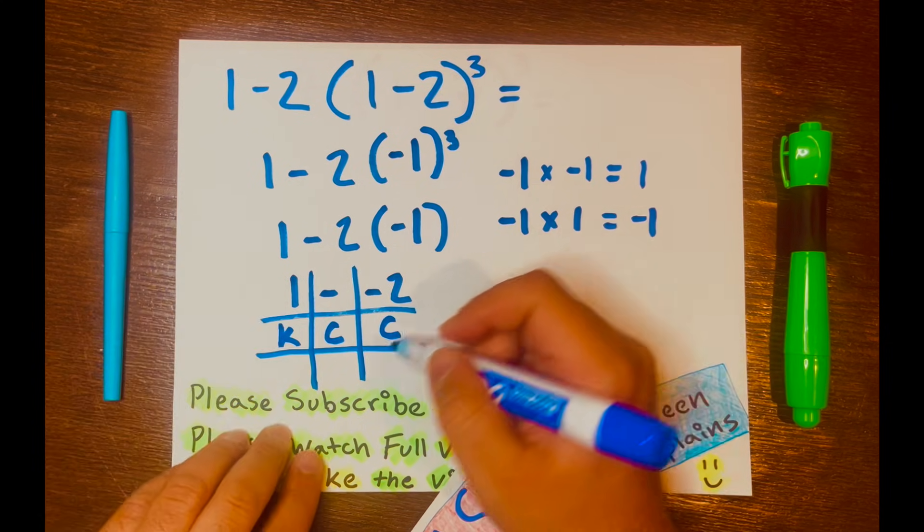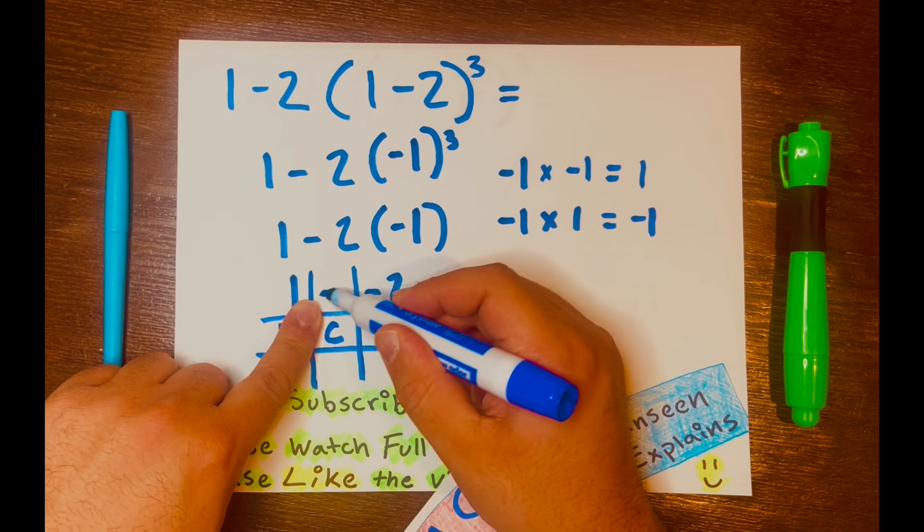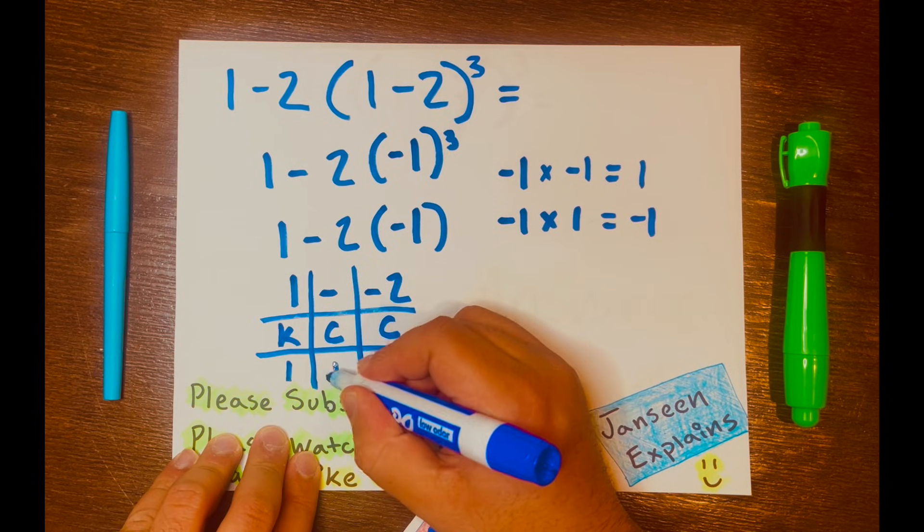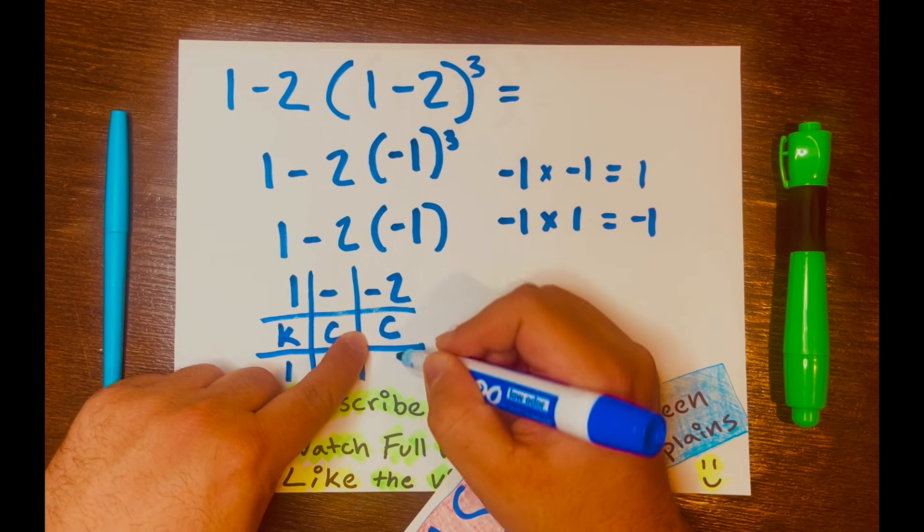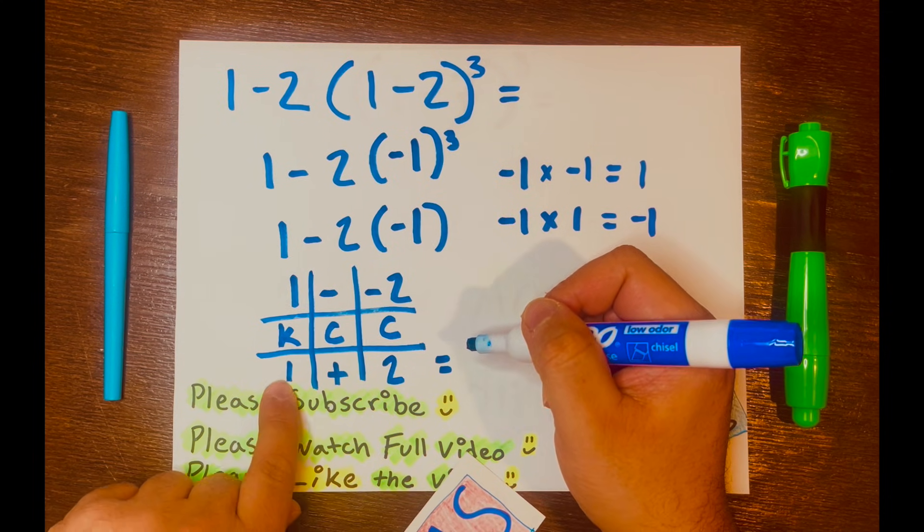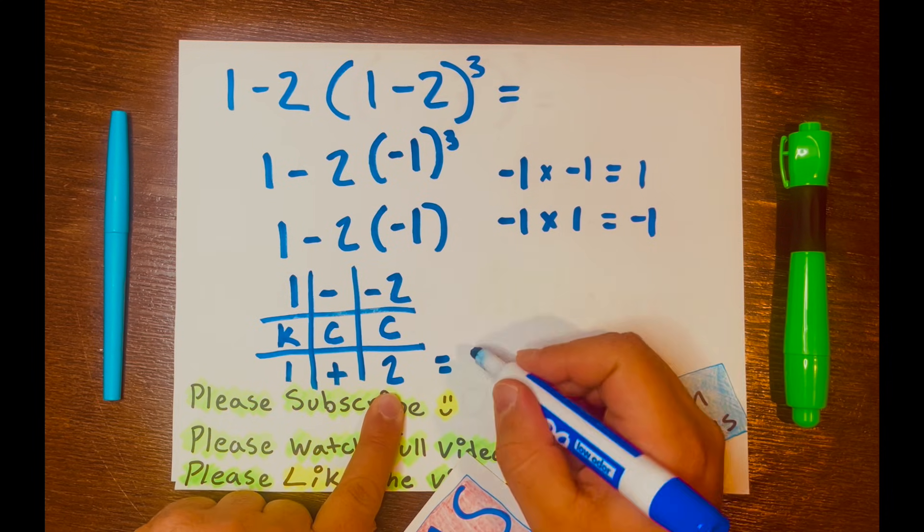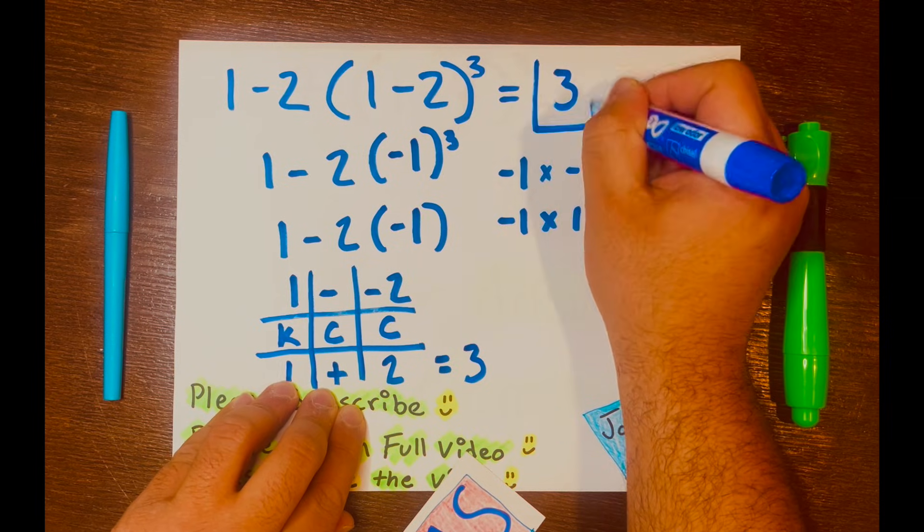So you keep the first number. You change the subtraction to addition. And then you change the negative 2 to its opposite. So it'll be a positive 2 or just 2. And then you just add 1 plus 2 equals 3. So your answer is 3.